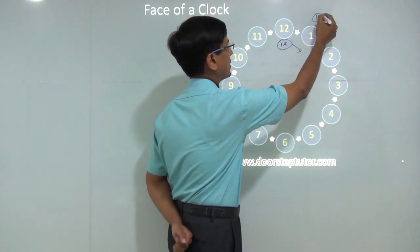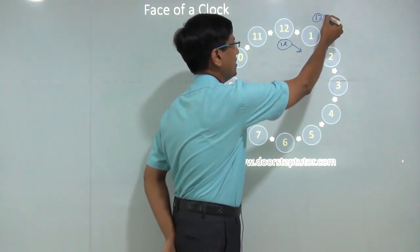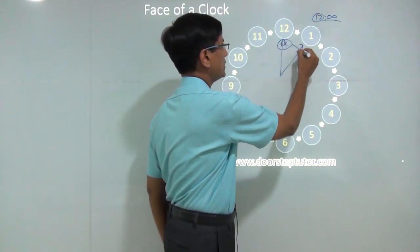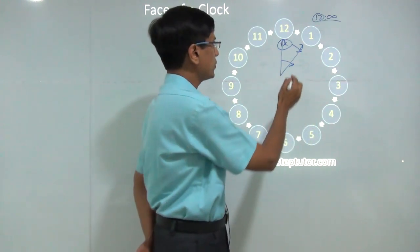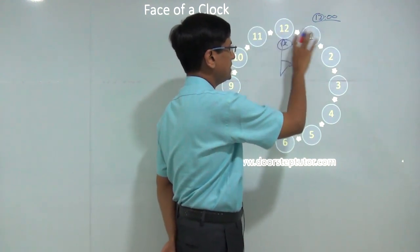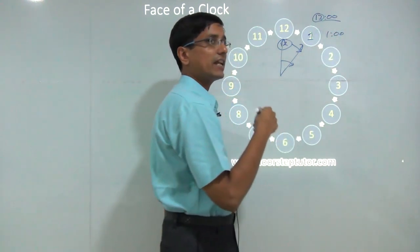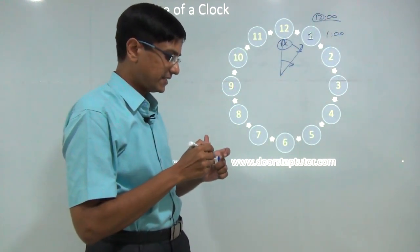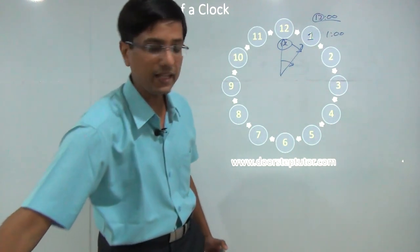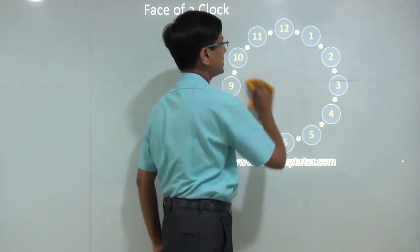There is no 13 on the clock face. The face of the clock looks exactly the same when the time is 13 o'clock because the hour hand just comes back to number 1. So if hypothetically there was a 13 o'clock, the clock face would look exactly the same as at 1 o'clock. In some sense, 13:00 is equivalent to 1:00 in this clock world.